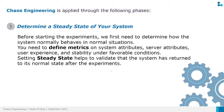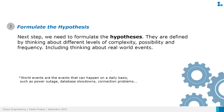The steady state helps us validate that the system returns to its normal state after the experiments. It's very important because after we run the experiments, we can be sure the system has returned to its normal and safe state. Then after establishing the steady state, we need to formulate the hypothesis.